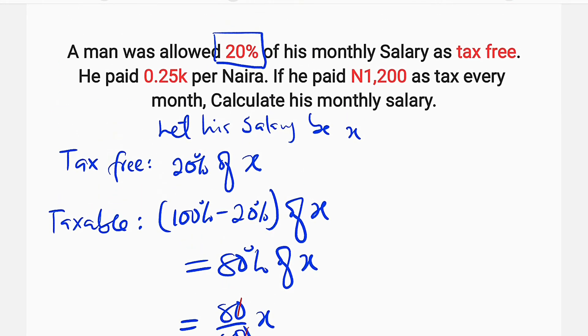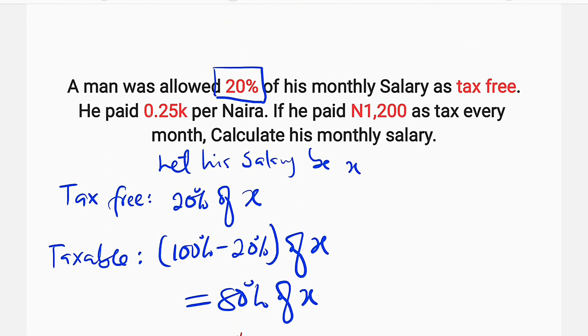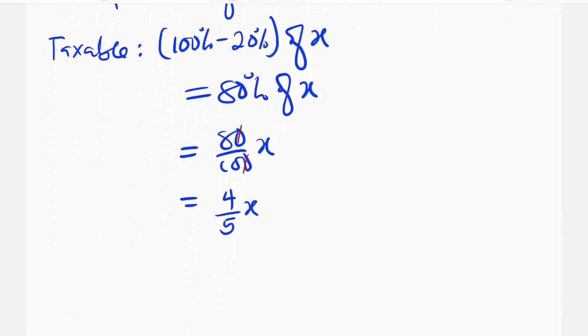Okay, let's go back to the question. From the question, we have learned that he used to pay 25 kobo per every naira every month. And this is the total amount he used to pay every month. So let us make it clear here.